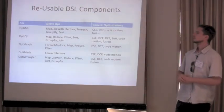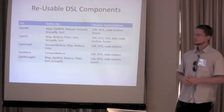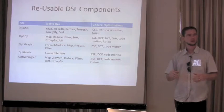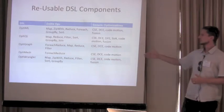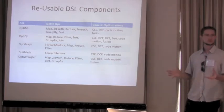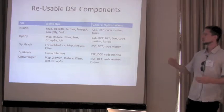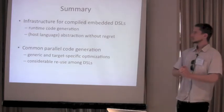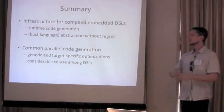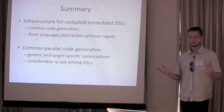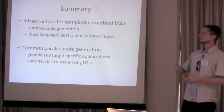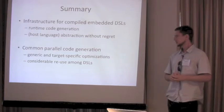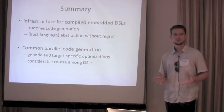What we found about reuse in DSLs is actually surprising: usually you'd think a DSL is completely domain-specific with many domain-specific things. But it turns out that many optimizations and Delight ops can be reused between DSLs — patterns like map, zip, reduce are pretty generic even though used by many DSLs. In summary, Delight is infrastructure for compiled embedded DSLs with runtime code generation. By leveraging host language abstractions, we don't pay a runtime cost — abstraction without regret. We have common infrastructure for parallel code generation with generic patterns and customizations, and we've seen considerable reuse among DSLs.